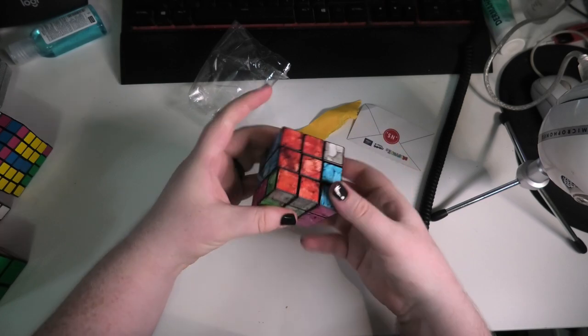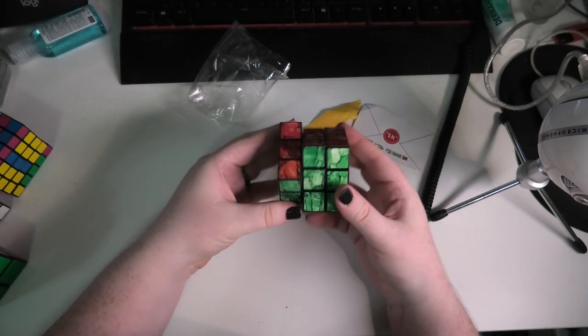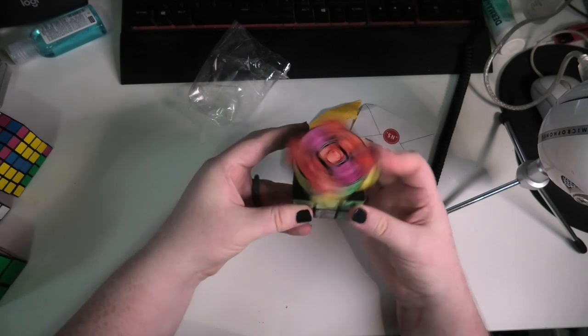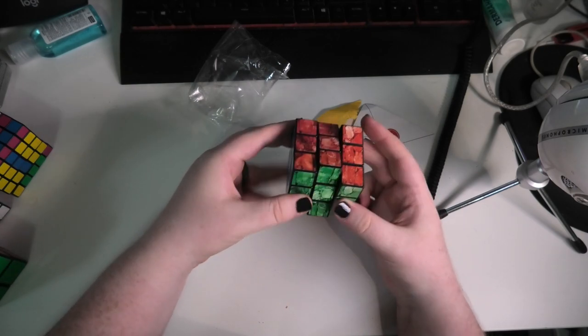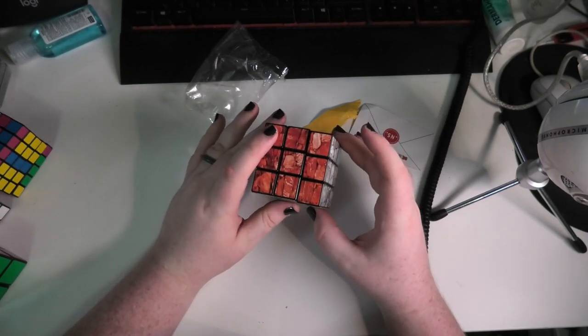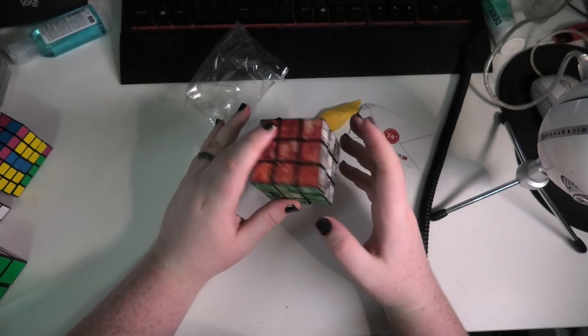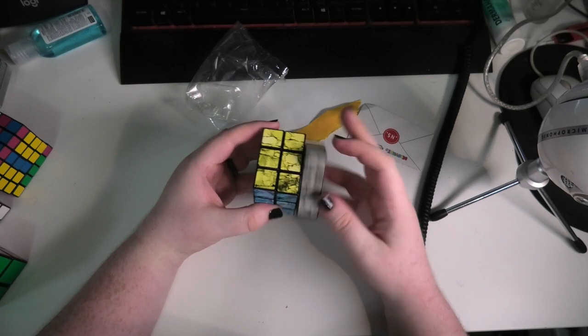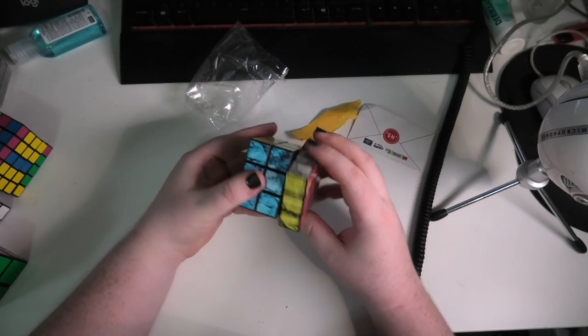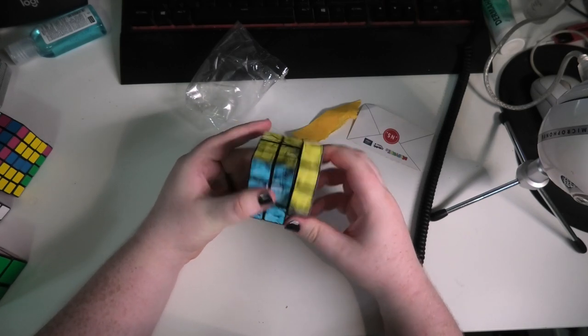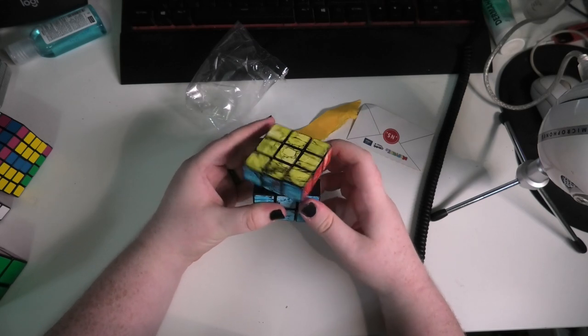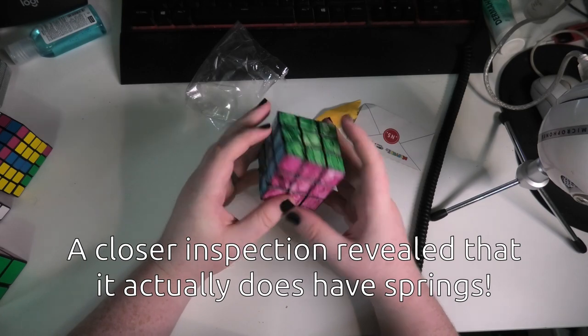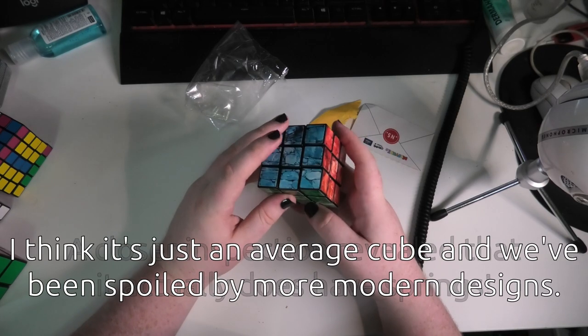This is weird. This is like a bloody review video for Eastsheen cubes. Okay, so as expected for an Eastsheen cube, it is really very smooth. However, you may have noticed, it does not corner cut very well, and I do not think there are any springs in this cube whatsoever, which doesn't really surprise me. That does seem to be Eastsheen's thing.